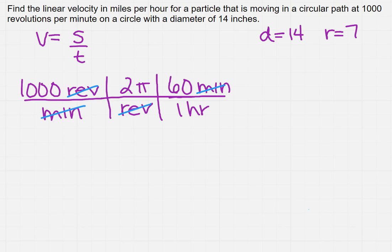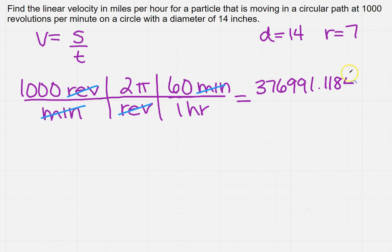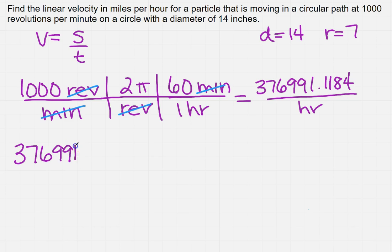I'm going to go ahead and do this calculation. Remember, you do not want to round until you get to the very end. So if you don't want to write everything out on your calculator, make sure you leave it on the calculator screen. Here I've got this big number per hour, so I'm going to copy it down to the next line because we're not finished — we need miles per hour.